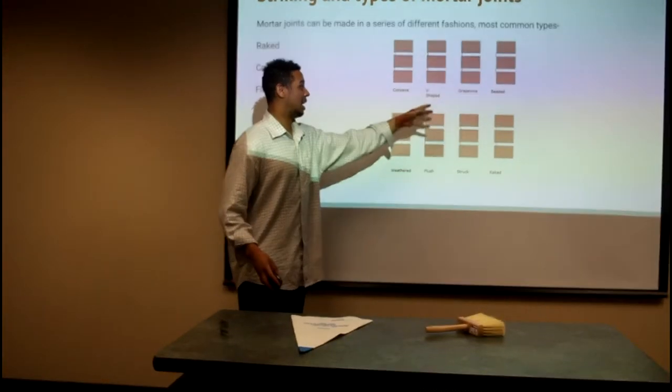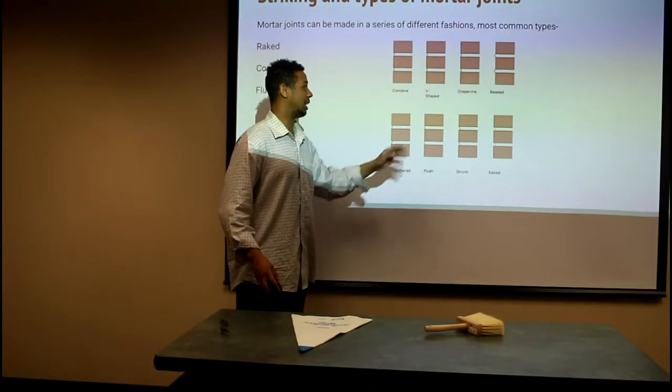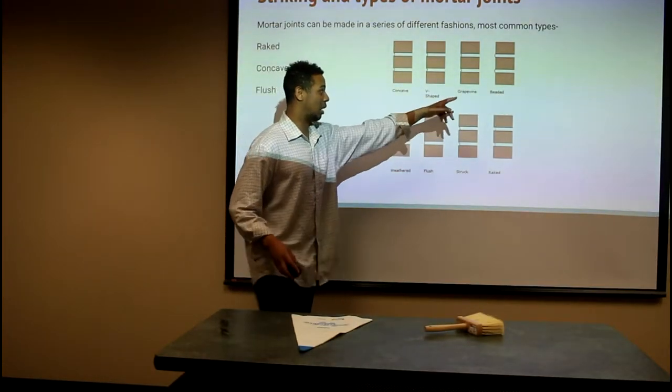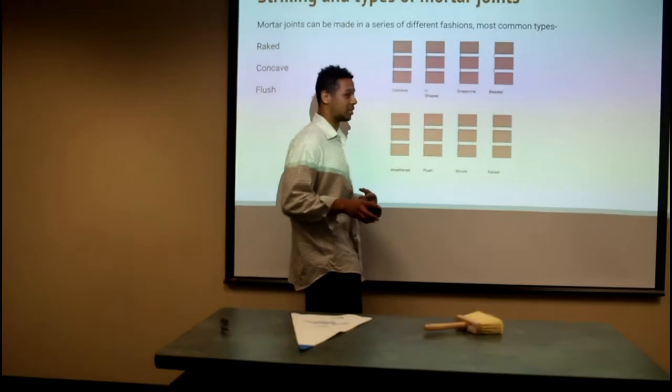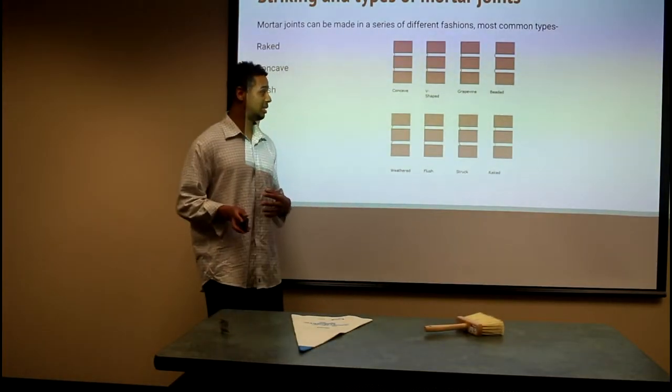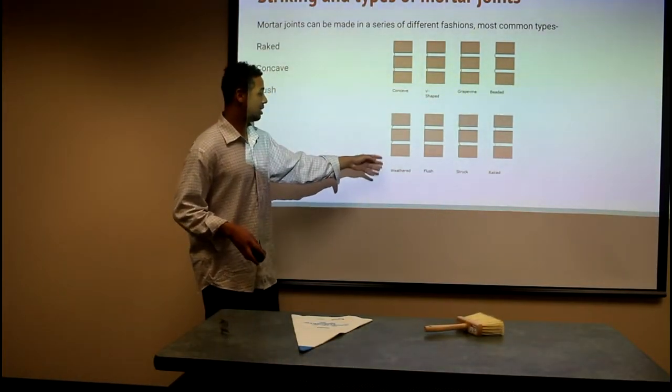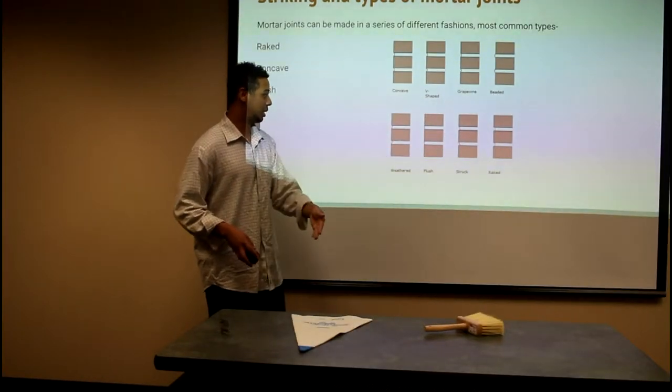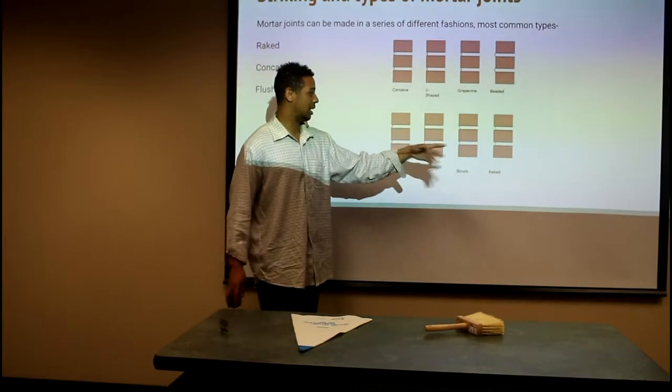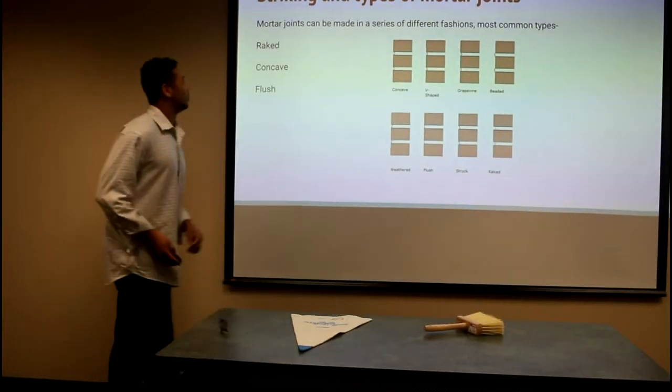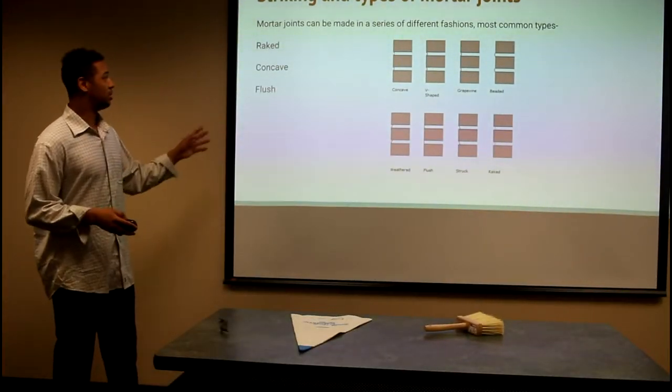For a concave joint, you would use a joiner like this. These tools help you for putting in that indentation into a joint. That's what we call striking. You have beaded, grapevine, weather joints, flush joints which are the flat joints. You'd probably use a sponge for that. Strike joints and rake joints. The most common types I've seen are rake joints, concave joints, and flush joints.